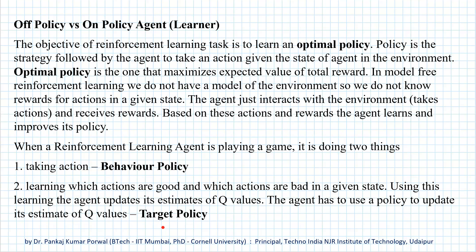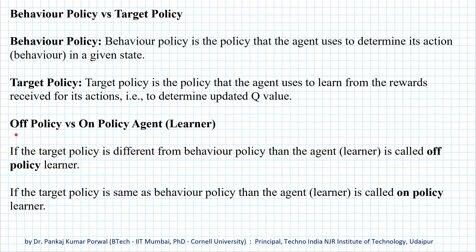In general, for a model-free reinforcement learning game, the behavior policy and the target policy for the agent can be different. Our agent will be called an off-policy agent or off-policy learner if the target policy is different from the behavior policy. The agent will be called an on-policy agent or on-policy learner if the target policy is the same as the behavior policy. Our agent is called on-policy because it uses a policy to play the game and at the same time updates that same policy based on rewards received. Q-learning is an off-policy learning algorithm where the behavior policy is different from the target policy, and Sarsa is an on-policy learning algorithm because the target policy is the same as the behavior policy.